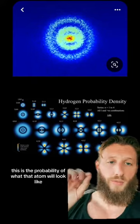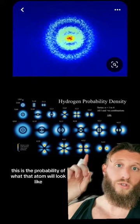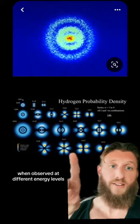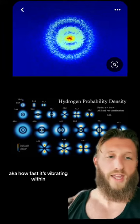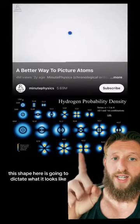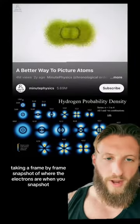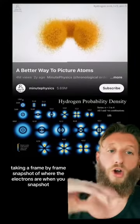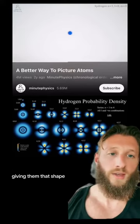That's an actual picture of a hydrogen atom. This is the probability of what that atom will look like when observed at different energy levels - how fast it's vibrating within this shape is going to dictate what it looks like. Taking a frame-by-frame snapshot of where the electrons are when you snapshot, giving them that shape.